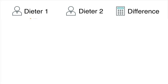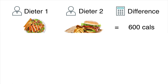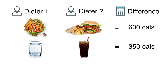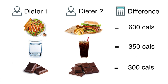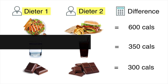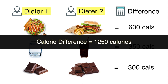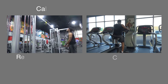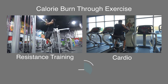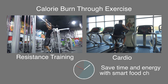Now let's look at an example of why diet is more important than training when it comes to fat loss. The food choices made in a single meal can have a major impact on the amount of calories consumed. Dieter One chose a low calorie, high protein lunch with water and a couple small pieces of chocolate, while Dieter Two got a burger and fries, a pop, and ate an entire chocolate bar. The calorie difference between these two meals is 1,250 calories — burning that through resistance training and cardio would require hours in the gym. It is much more time and energy efficient to make smart food choices.